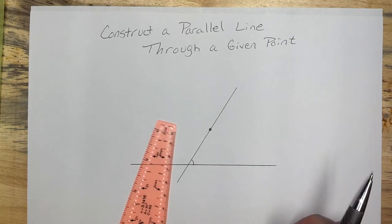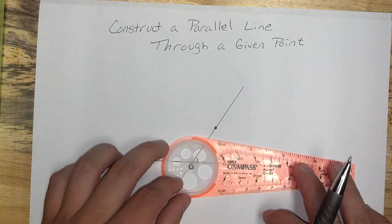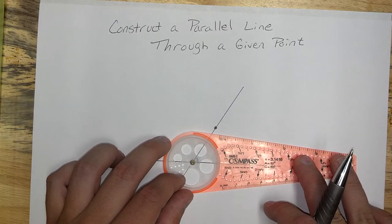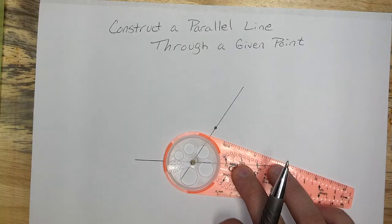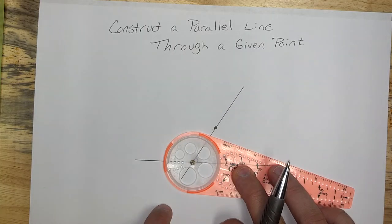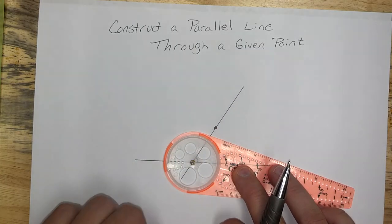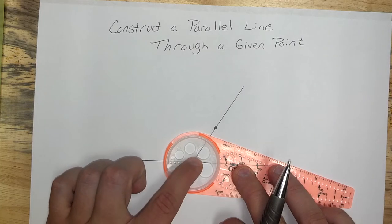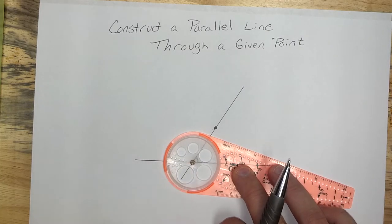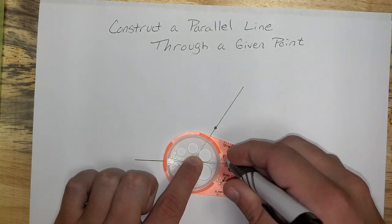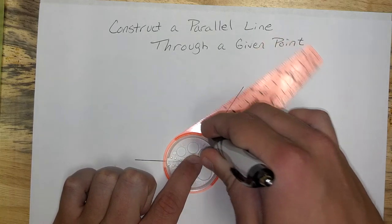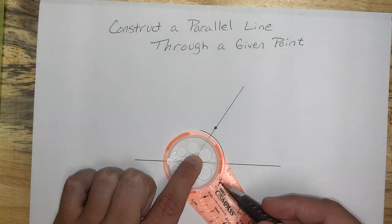First step, go ahead and create an arc using where my original line and the line through my point cross. Brass ring right there. Go ahead and create an arc right here like that. Remember which hole you used.